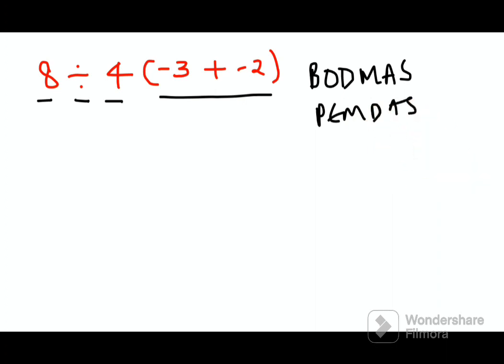In this case, first we will do the bracket. So we'll keep the rest as it is: 8 divided by 4. This bracket is getting multiplied, so we'll do multiplication. Minus 3 minus 2.